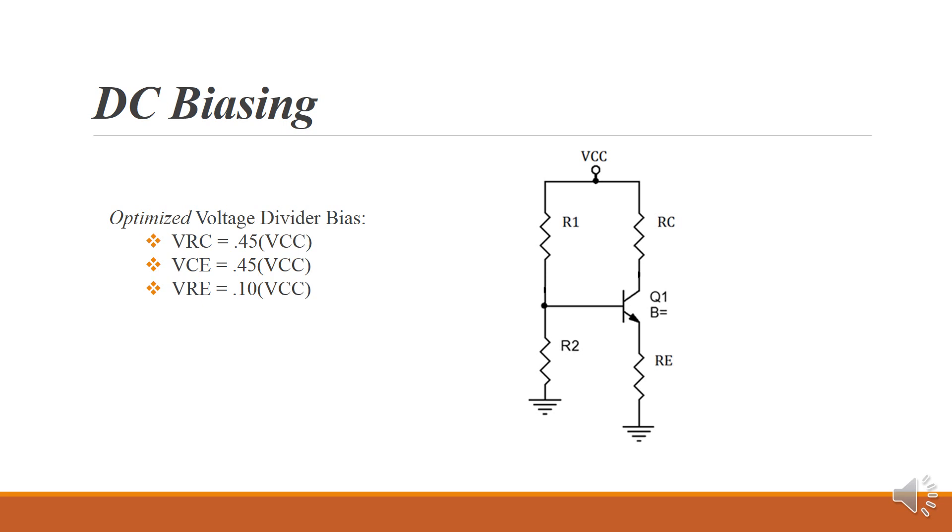In order to optimize this circuit, we need VRC to equal 45% of VCC, VCE to equal 45% of VCC, and VRE to equal 10% of VCC.